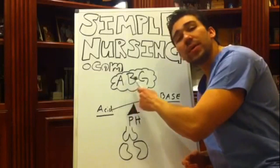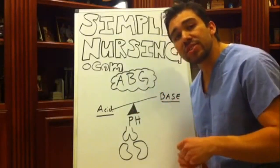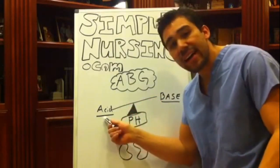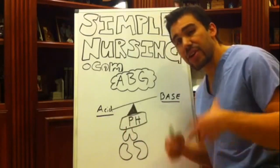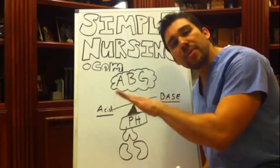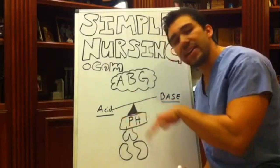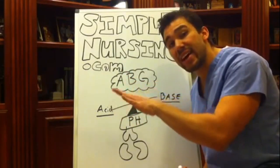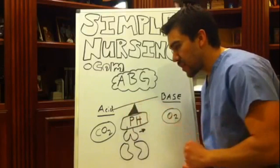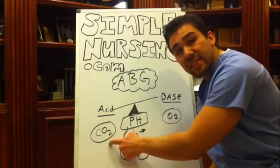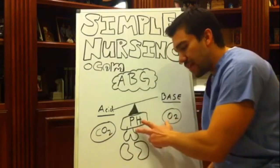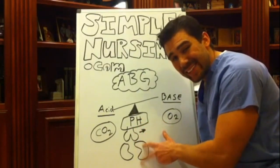ABGs stand for Arterial Blood Gas. ABGs interpret two things: is your body acidotic, or is your body basic — in other words, alkalosis? And where is it basic or acidotic? If you remember your pathophysiology, your body really runs on a basic or acidotic teeter-totter. It's either going to be respiratory acid or base, or metabolic acid or base. This stems from your lungs or your kidneys.